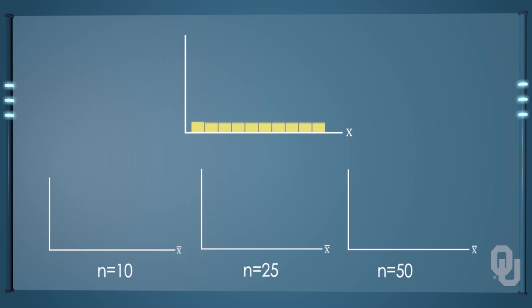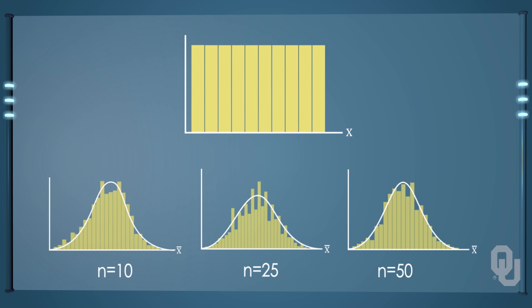The next example poses a harder case. This is a uniform distribution where all observations have an equal probability of being selected. The uniform distribution, a bit amazingly, quickly approaches the normal distribution. Even with only a sample of 10, we see the sampling distribution looking very nearly the normal distribution.